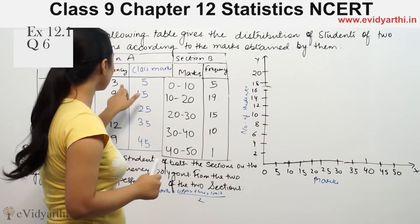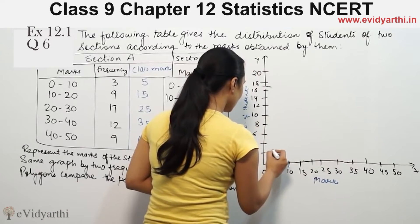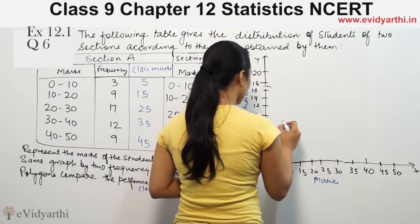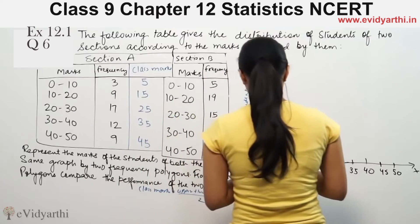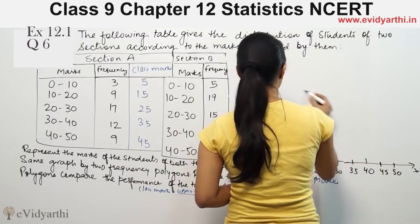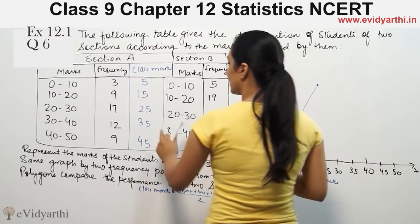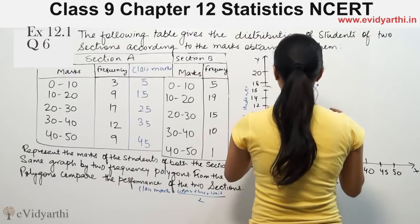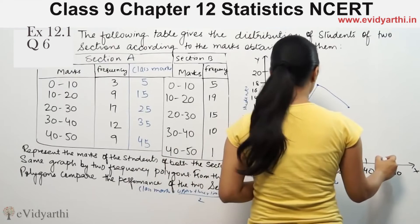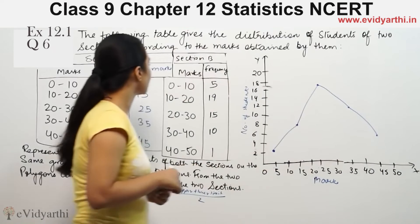Now the frequency is 3 for class mark 5 in Section A. So at 5 on x-axis and 3 on y-axis, I plot this point. Then I continue plotting the points for frequencies 9, 17, 12, and 9 at their respective class marks 15, 25, 35, and 45. This is for Section A.